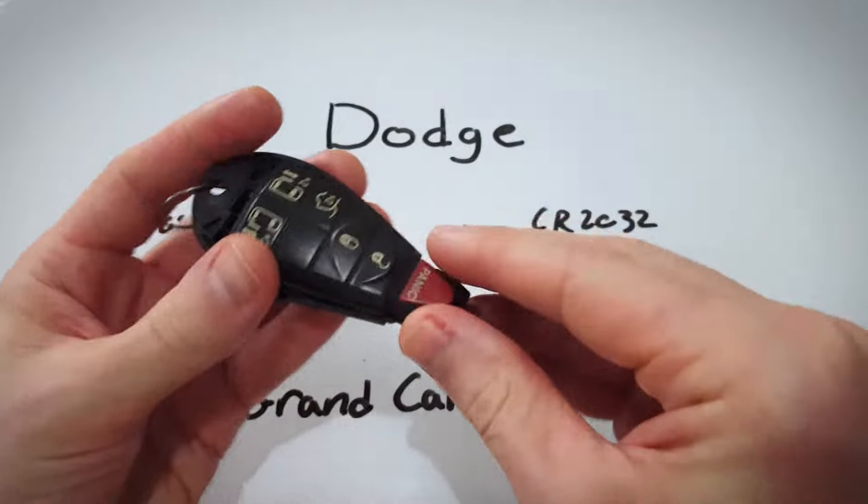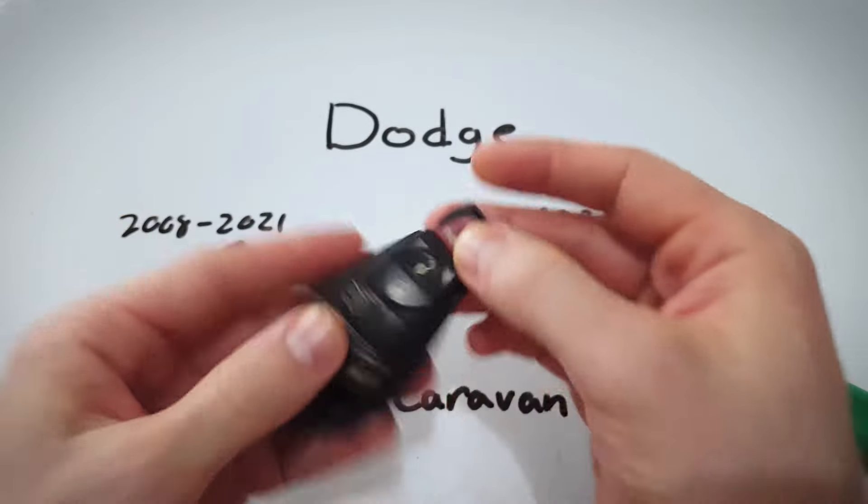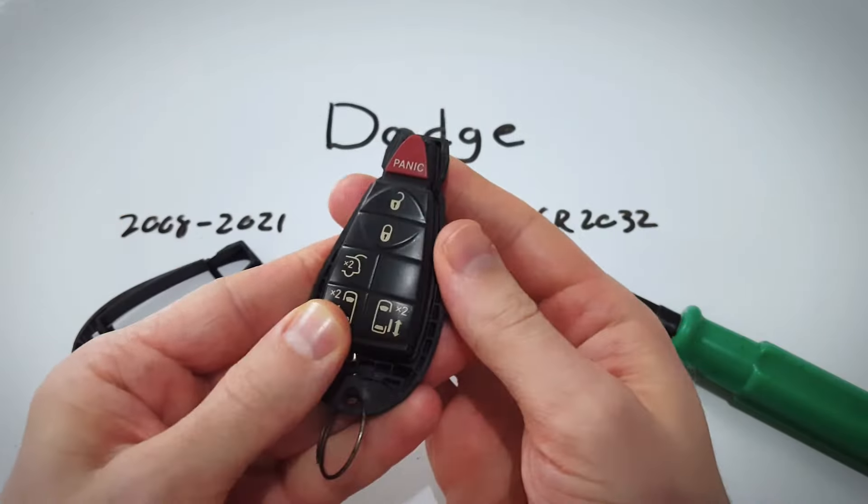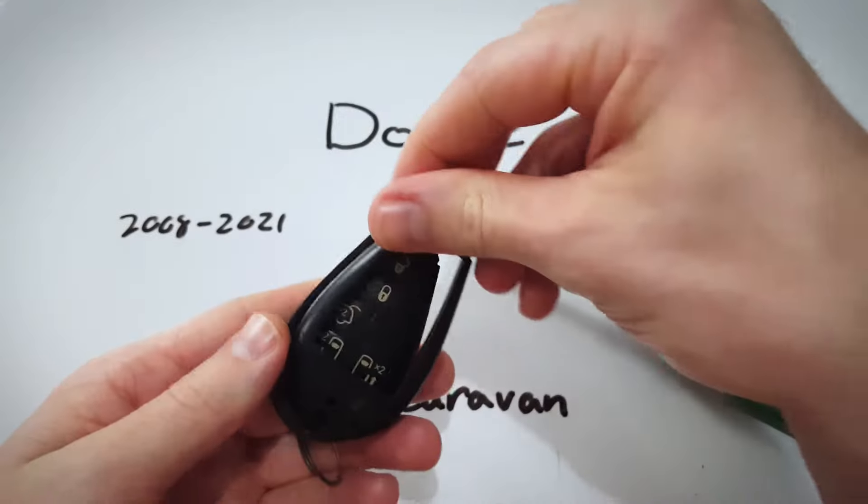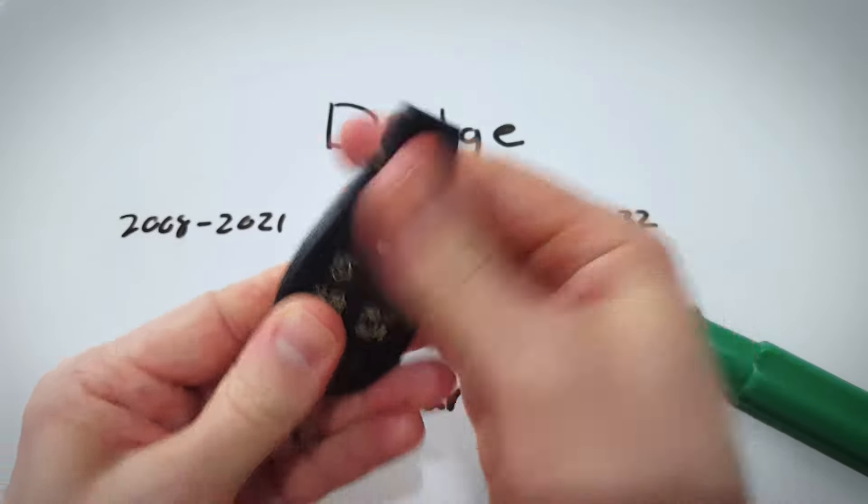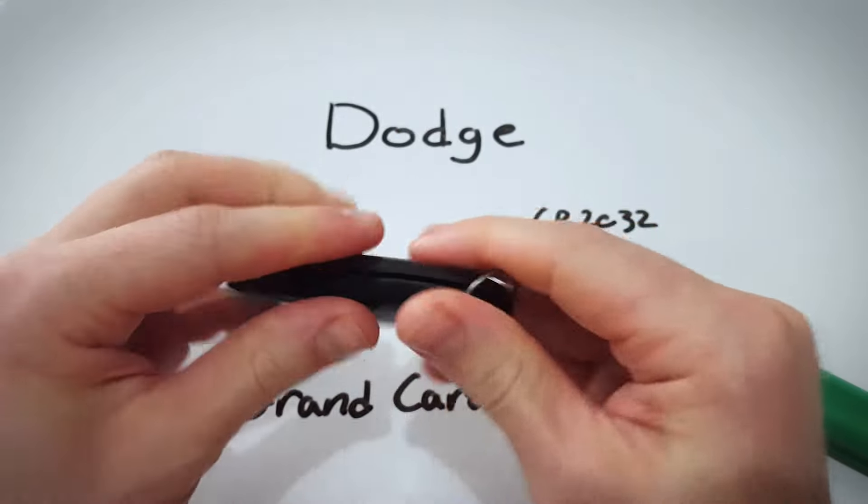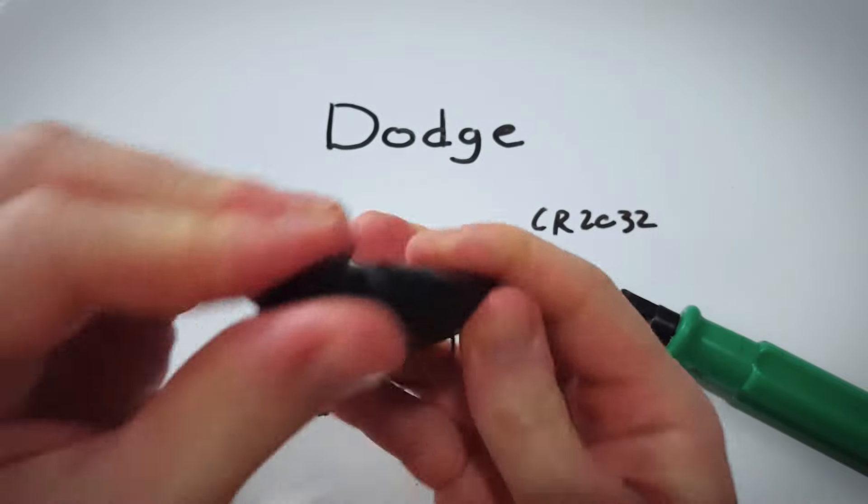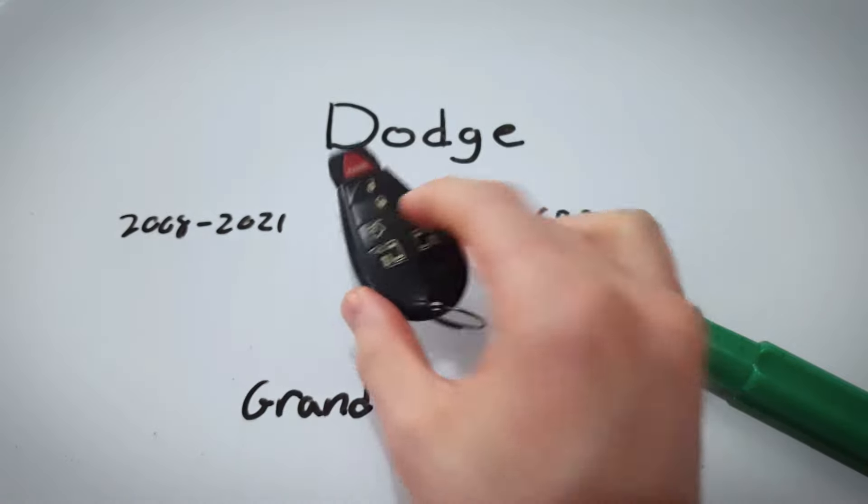I'm just going to put this all back together. The rubber buttons go on top of the battery. This just sits on top and you click it back in place and that's really all it takes. You are done.